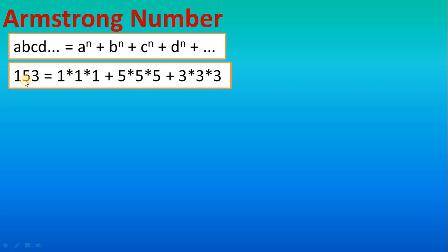That power number is calculated based on the number of digits — so if we have three digits, it will be cubed. If both sides are equal, then it is an Armstrong number. That is the logic.